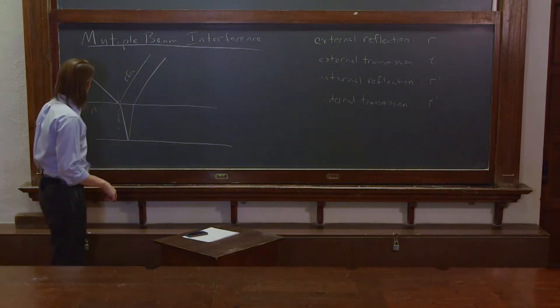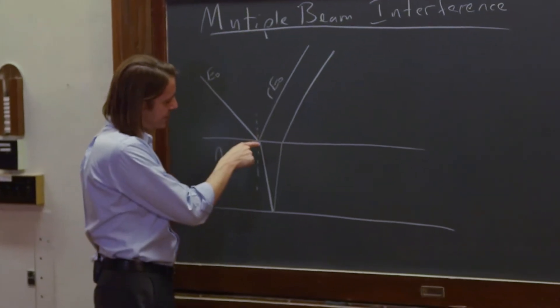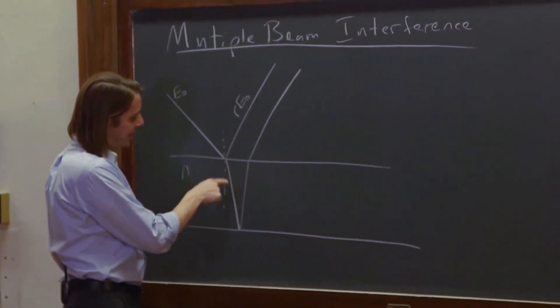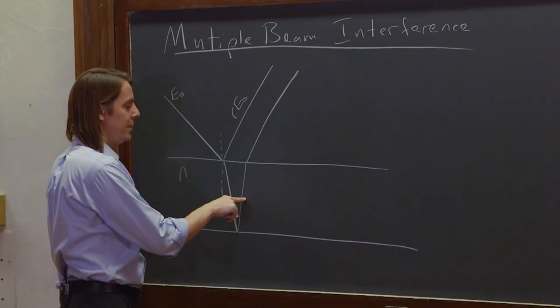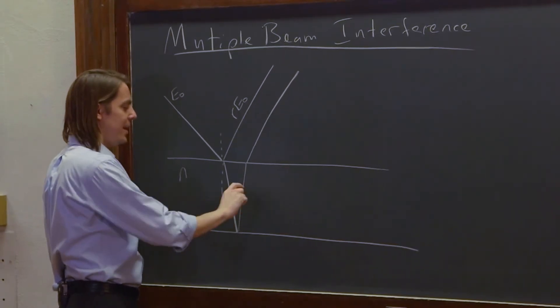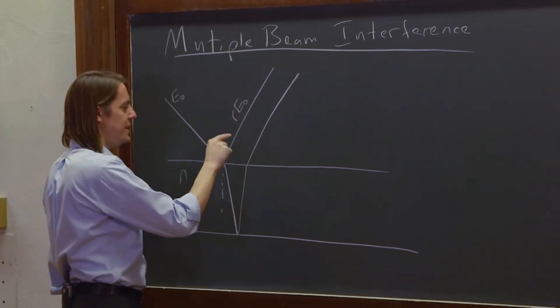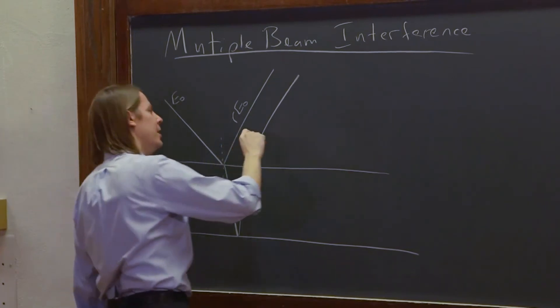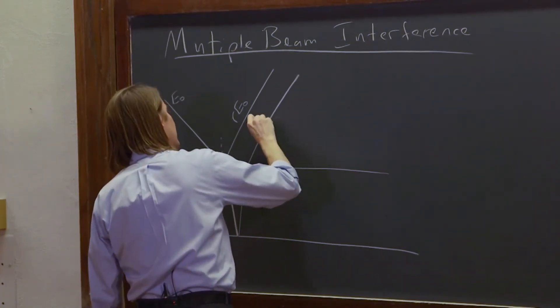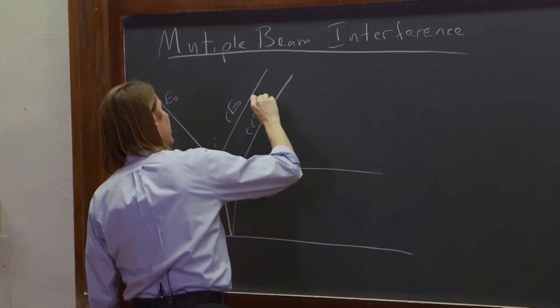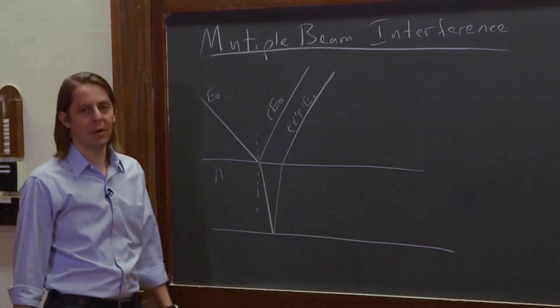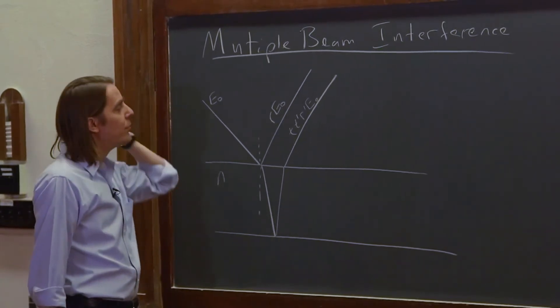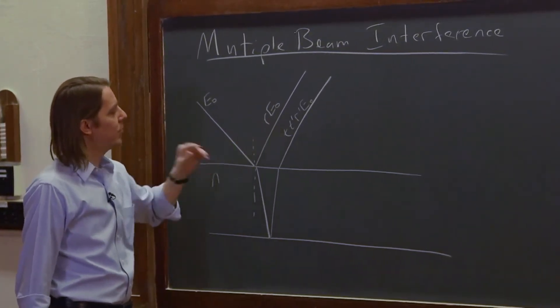So this would be R-prime. Here it is T E-naught here, and then that amplitude is reflected, so it's T times R-prime E-naught. And then that amplitude is transmitted, so it's T, T-prime, R-prime, E-naught. This is T, T-prime, R-prime, E-naught, if we want to know the E-field amplitude that comes out right there. And before, we sort of argued that this is 4%, this is almost 4%. And we also argued that this would be really small, because some of it will reflect again.